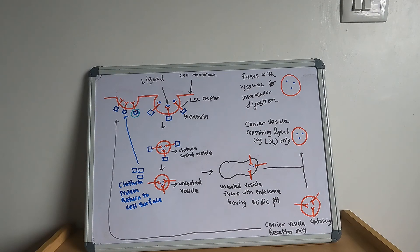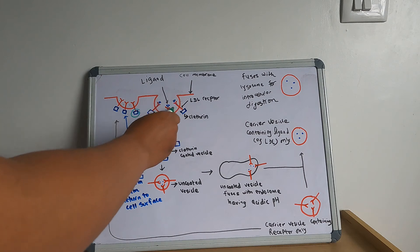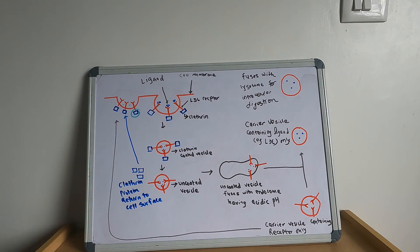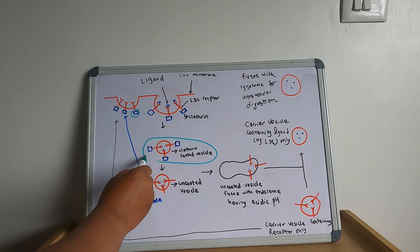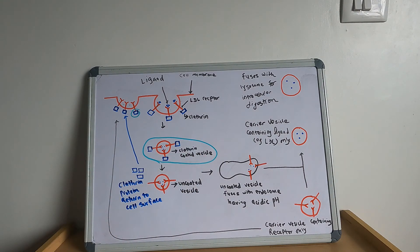After the receptor-ligand complex forms, the membrane invaginates and forms a clathrin-coated pit. The clathrin-coated pit then pinches off to form clathrin-coated vesicles that contain the receptor-ligand complex, which then come to lie in the cytoplasm of the cell.